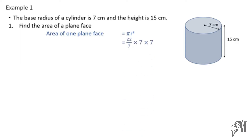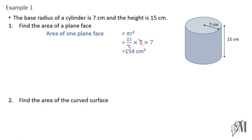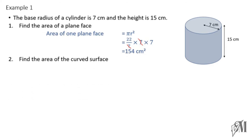Substituting the values, with r = 7, the 7s cancel and 22 × 7 gives us 154 square centimeters. The second part of the question asks us to find the area of the curved surface, which is 2πrh.